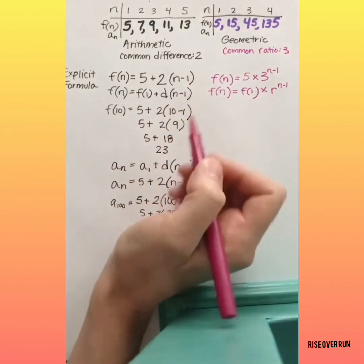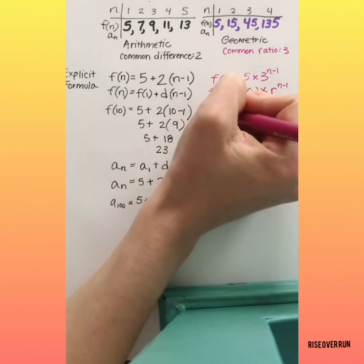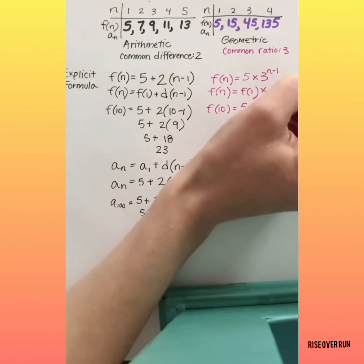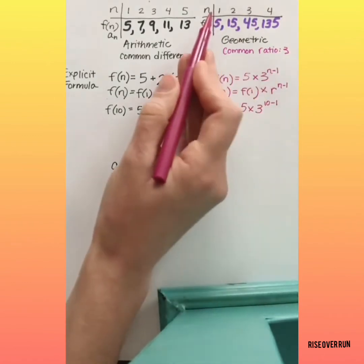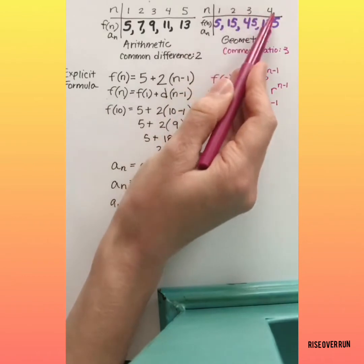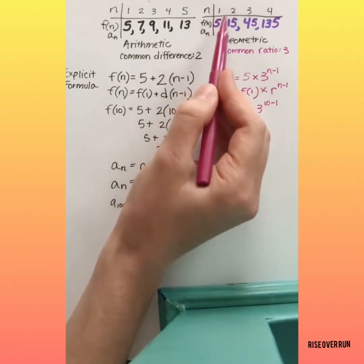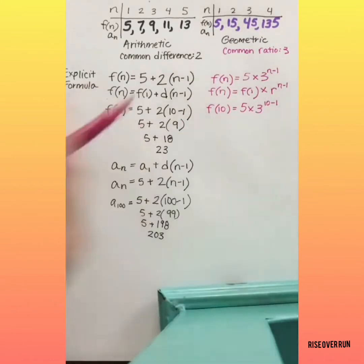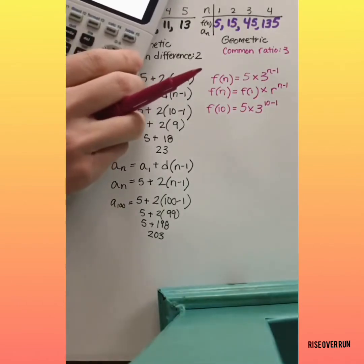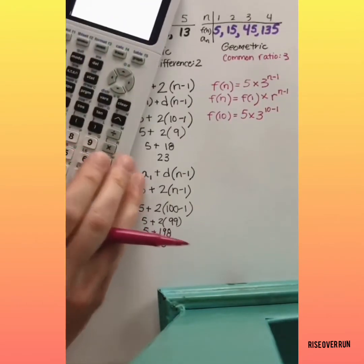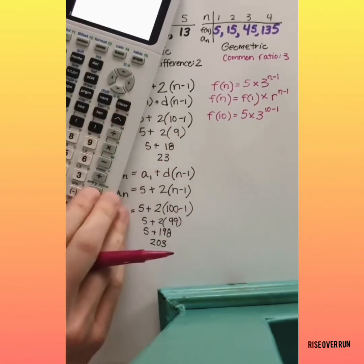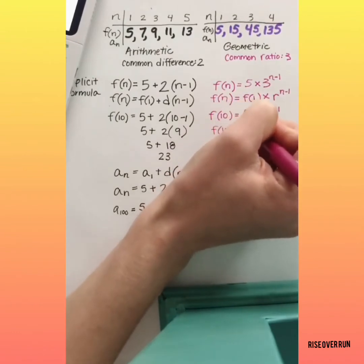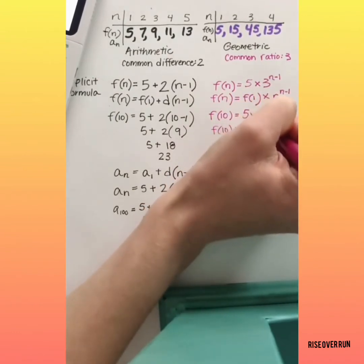Let's use this formula to find the 10th term in the sequence. Remember, n is always referring to what number term you want — it's not the actual answer; it just identifies which term you're talking about. So we plug 10 in for n. You probably wouldn't be expected to do this by hand, so we can use a calculator: 5 times 3 raised to the 9th power. The 10th term is 98,415.